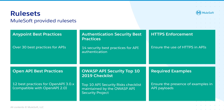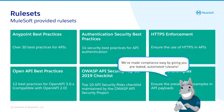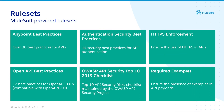The next thing we are going to look at are rule sets. Rule sets are really the heart of API governance as these are the bits and pieces which your APIs will be validated against. At GA, MuleSoft offers six different out-of-the-box rule sets: Anypoint best practices with over 30 best practices for APIs; Authentication security best practices with 14 security best practices for API authentication; HTTPS enforcement; OpenAPI best practices with 12 best practices around OpenAPI 3.0 also compatible with OpenAPI 2.0; OWASP API security top 10 checklist with the top 10 API security risk checklist maintained by the OWASP API security project; and Required examples to ensure the presence of examples in API payloads. In case you're missing a rule set, feel free to submit your ideas on the MuleSoft Ideas Portal — the link can be found in the video description.